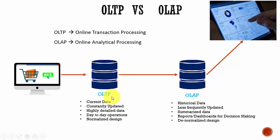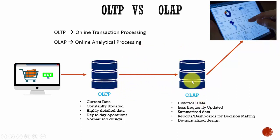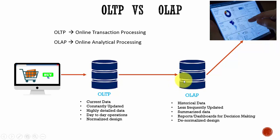When we say highly normalized, data is stored in multiple tables and a relationship is established between those small tables. In an OLAP database, we store the data for analytical purposes. We load all the data from the OLTP database into the OLAP database. While loading this data from OLTP to OLAP, we load the summary versions of the data rather than the detailed data.